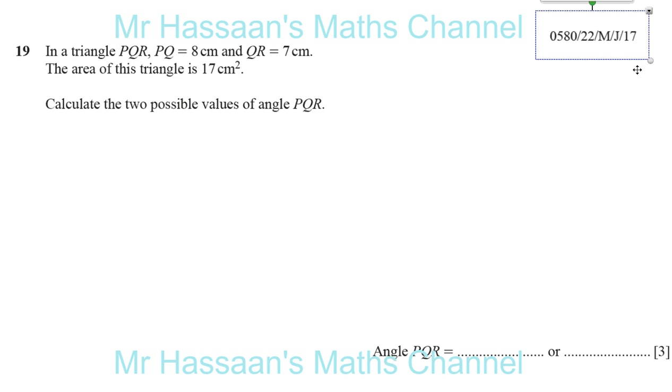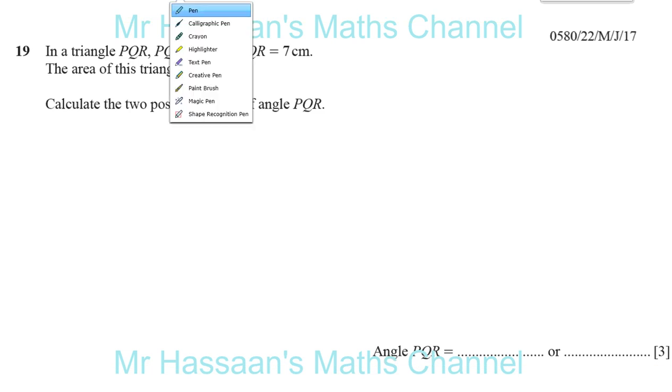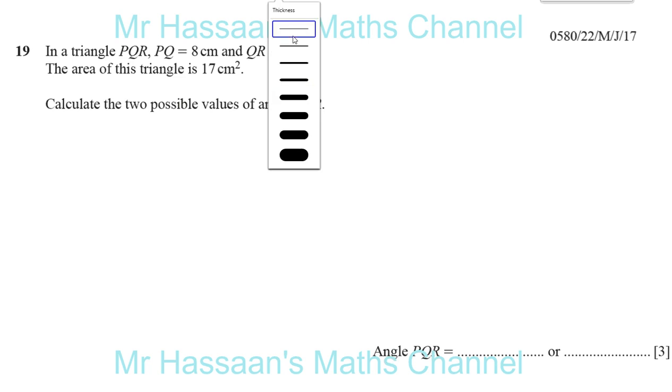Okay, so in a question like this, we need to do a bit of thinking, a bit of brainstorming. They told us some information about this triangle. They told us the area and two of the lengths. PQR, PQ and QR. Now the lines PQ and QR, they will intersect at the angle Q.